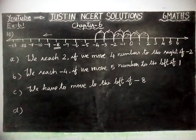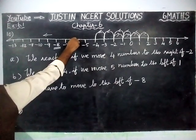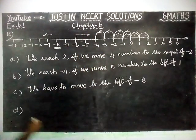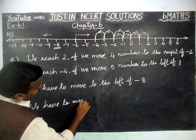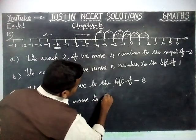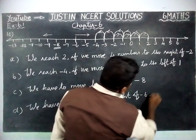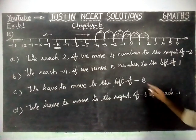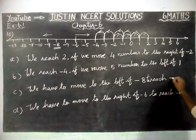Part D question is: if we are at minus 6 on the number line, in which direction should we move to reach minus 1? To reach minus 1, we have to move to the right of minus 6.